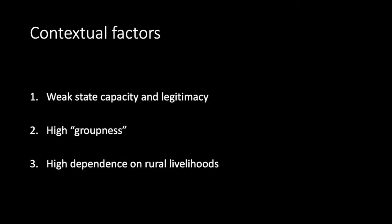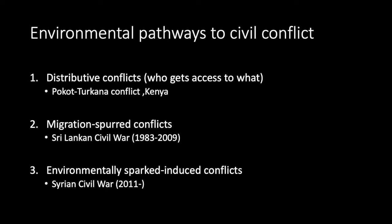Taken together, environmental stress is most likely to result in civil conflict when: 1) state institutions are weak or perceived as biased or illegitimate; 2) groupness is high; and 3) renewable resources are central to livelihoods. These conditions prevail in a large number of developing countries near the equator, which will bear the brunt of climate change impacts. We'll now discuss three common pathways via which environmental stress leads to conflict: distributive conflicts, migration-spurred conflicts, and environmentally sparked conflicts.